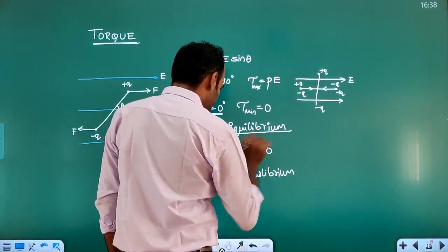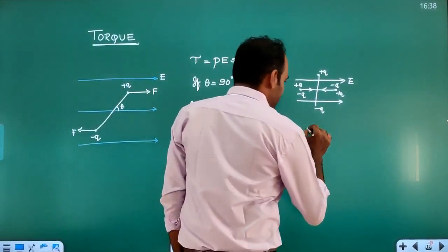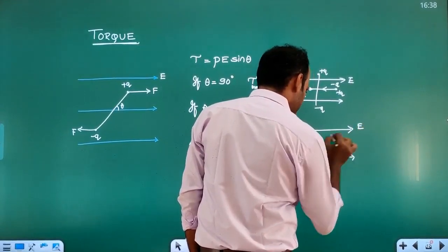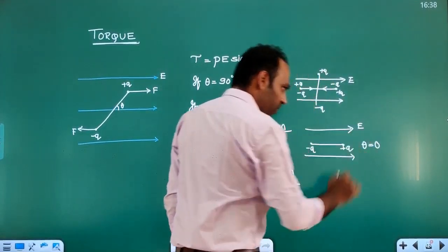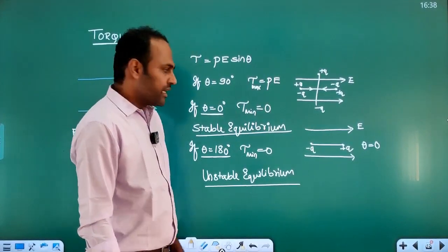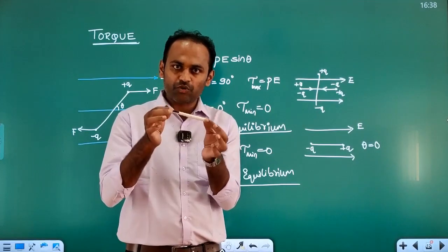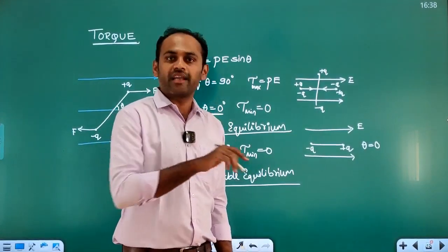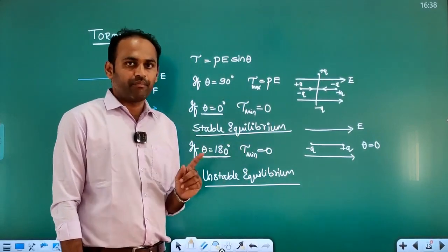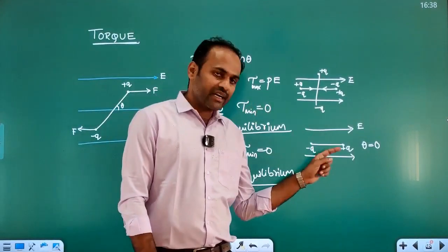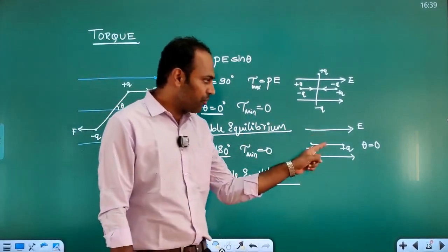Let us see what stable equilibrium and unstable equilibrium mean. For stable equilibrium, we place the dipole parallel to the electric field — minus q and plus q aligned along the field direction. When that happens, the dipole is said to be in stable equilibrium. If we keep it anti-parallel, with plus q and minus q reversed, that is unstable equilibrium — it will not come back to its original position.